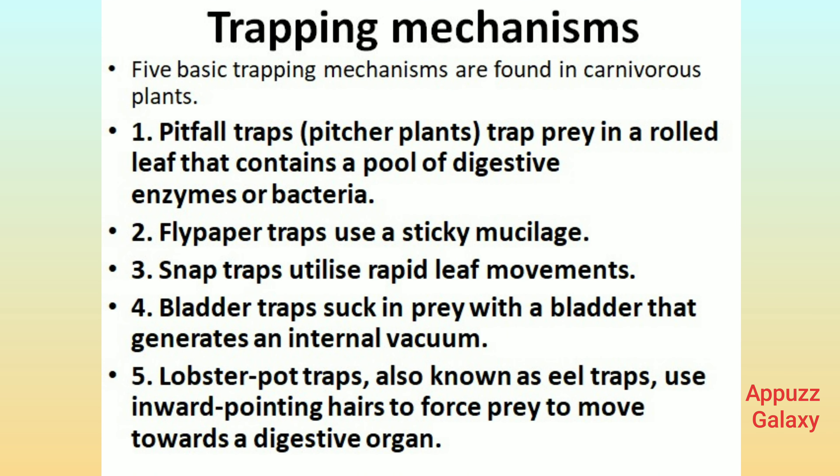Five basic trapping mechanisms are found in carnivorous plants: 1. Pitfall traps (pitcher plants) trap prey in a rolled leaf that contains a pool of digestive enzymes or bacteria. 2. Flypaper traps use a sticky mucilage. 3. Snap traps utilize rapid leaf movements. 4. Bladder traps suck in prey with a bladder that generates an internal vacuum. 5. Lobster pot traps, also known as eel traps, use inward-pointing hairs to force prey to move towards a digestive organ.